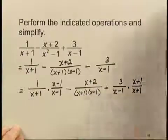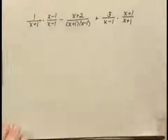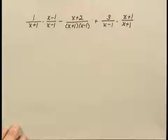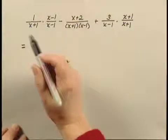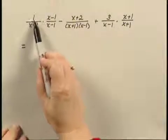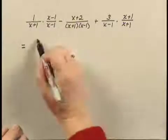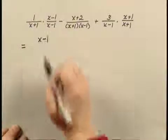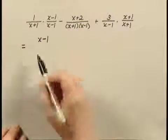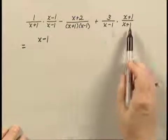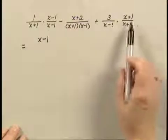Now I need to do those multiplications. Multiplying here, 1 times x minus 1 is x minus 1. And since I'm going to have a common denominator all the way across, I'll combine the numerators as I go.